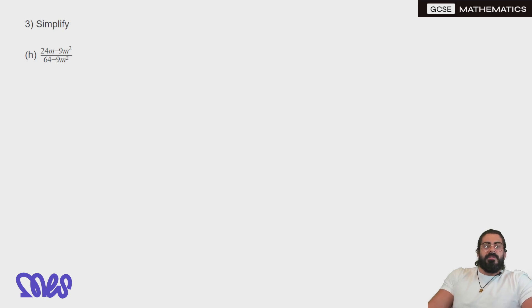And finally, for this one, 24m minus 9m squared over 64 minus 9m squared. From the top, we can definitely take out an m. We can actually take out a 3 as well. Now 3 goes into 24 8 times minus, 3 goes into 9 3 times. And don't forget, we factorized out an m, so that's going to disappear and m squared is just going to become m.